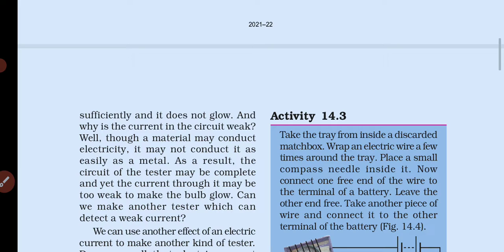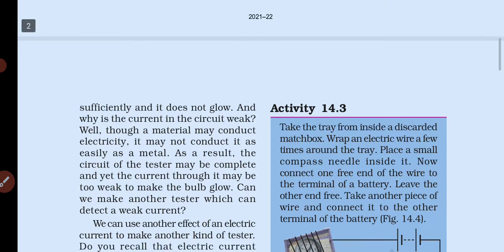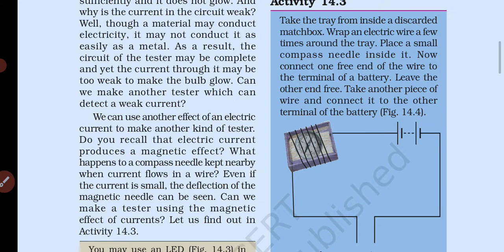As a result, the circuit of the tester may be complete and yet the current through it may be too weak to make the bulb glow. यह possible है कि cell का एक end liquid के अंदर हो और दूसरा tester से connected हो, और electric current pass भी हो रहा हो, मगर इतना नहीं कि bulb जल सके — यानि circuit बहुत weak होगा। We can use another effect of electric current to make another kind of tester — electric current का magnetic effect इस्तेमाल कर सकते हैं।